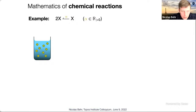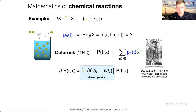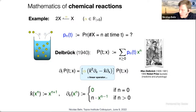For Petri nets I take the simplest case: one kind of token, one transition taking one particle and producing two — an autocatalytic reaction system. In continuous Markov chain theory you reason about the probability at time t of having n particles after firing at random. The standard approach is due to Delbruck: form the probability generating function where the coefficient of x^n is the probability at time t of having n particles.